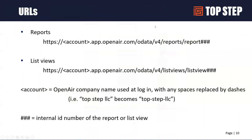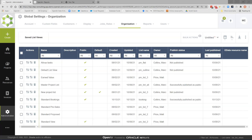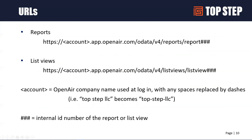Here are the URLs we talked about for reports and lists. Your account is just your company's name in OpenAir with any spaces replaced by dashes — the same as when using OpenAir itself. You can see ours is Top Step Colton Solty. Then list views or reports use the word 'report' or 'list view' followed by the internal ID of the report or list view.